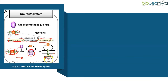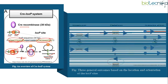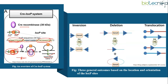The result of recombination depends on the orientation of the LOX-P site. The inactivated gene Y has a portion removed, and the remaining DNA is joined with DNA ligase. There are three general outcomes based on the location and orientation of the LOX-P sites: inversion, deletion, and translocation. In this overview figure, deletion is being shown, but inversion and translocation can also occur.